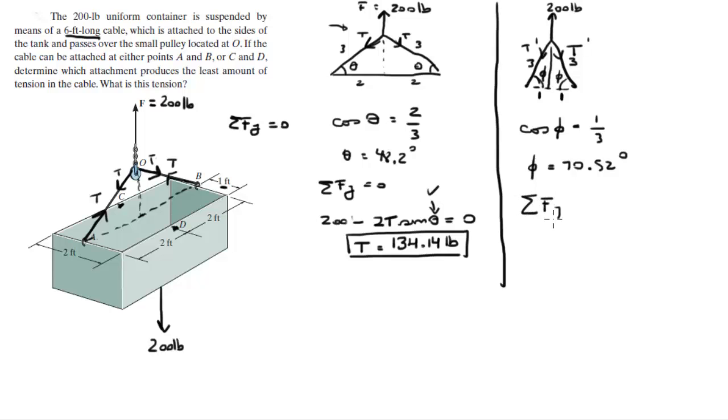You know that the sum of the forces in the Y is equal to 0, so 200 going up minus 2 T prime sine of phi which we have is equal to 0, so when you solve for T prime you get that it is equal to 106.1 pounds.